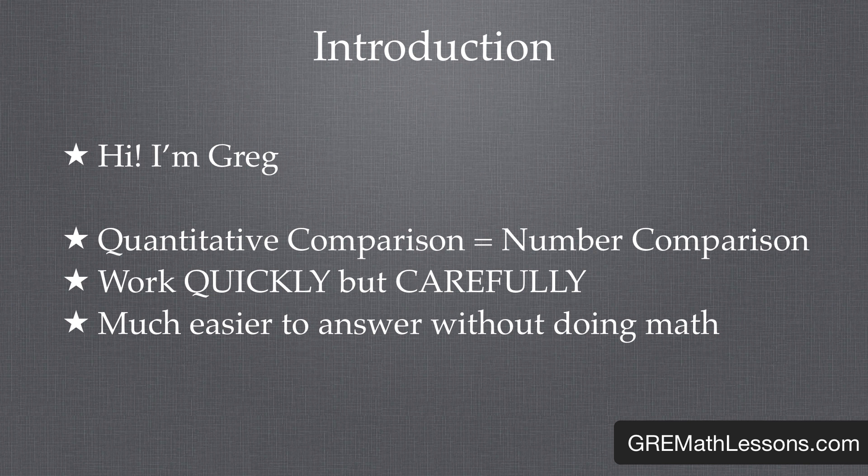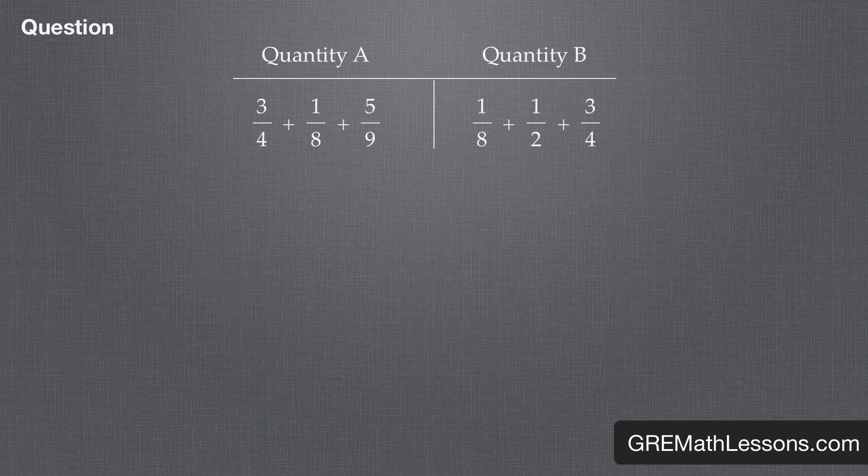I'll be showing you a few tricks, like how to answer them without doing any math. Alright, let's dive right in and take a look at our sample problem. Quantity A is three-fourths plus one-eighth plus five-ninths. Quantity B is one-eighth plus one-half plus three-fourths.